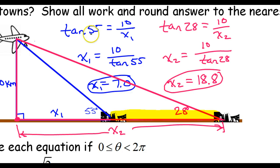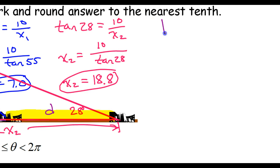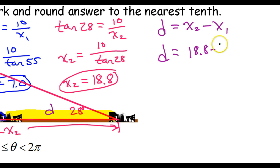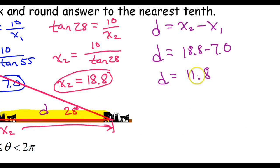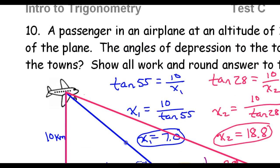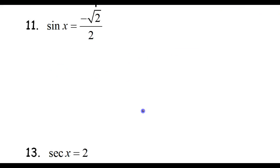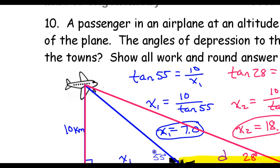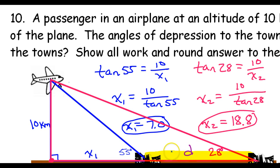The distance d between the two towns equals x2 minus x1, so 18.8 minus 7.0, which gives 11.8 kilometers. That is the final answer for number ten. I think that's going to be the last word problem, so that's going to do it for this video. I hope this was helpful — I will see you on the next video.